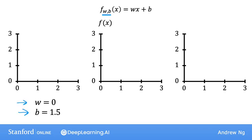When w is equal to 0 and b is equal to 1.5, then f looks like this horizontal line. In this case, the function f of x is 0 times x plus 1.5, so f is always a constant value. It always predicts 1.5 for the estimated value of y. So y hat is always equal to b, and here b is also called the y-intercept because that's where it crosses the vertical axis or the y-axis on this graph.